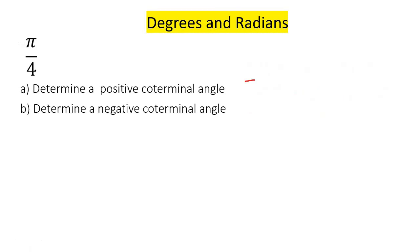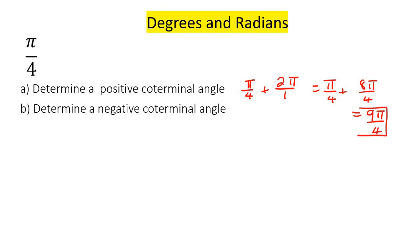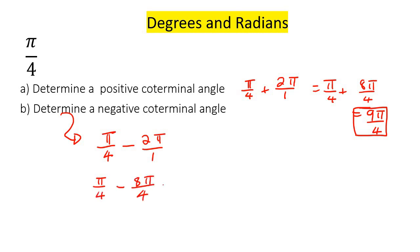Here's radians. To find a positive coterminal, I'm just going to add 2 pi. I need a common denominator, so that's going to become 9 pi over 4. And then to find a negative coterminal, I'm just going to subtract 2 pi. With a common denominator, that'll be negative 7 pi over 4. So there's my negative, there's my positive — pretty easy.